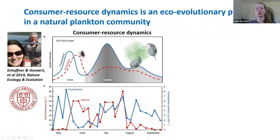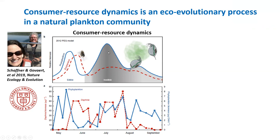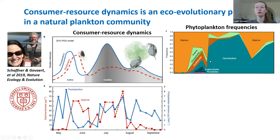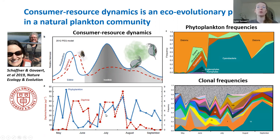We found the dynamics nicely corresponded with the plankton ecological group model: first an increase in phytoplankton densities, followed by an increase in zooplankton density. Then a decrease and another increase in phytoplankton — predicted to consist of inedible algae. This was confirmed in our field study, going from high diatom abundance to high abundance of toxic cyanobacteria, which is bad food for Daphnia. But more interestingly, we also observed a peak again in Daphnia densities, so we tracked clonal frequencies of Daphnia clones throughout the season.